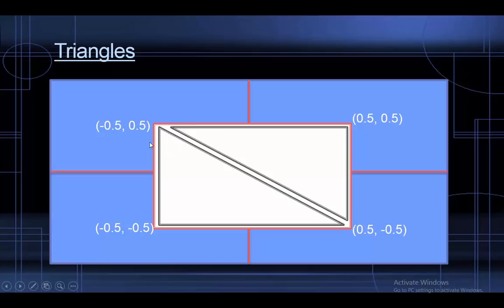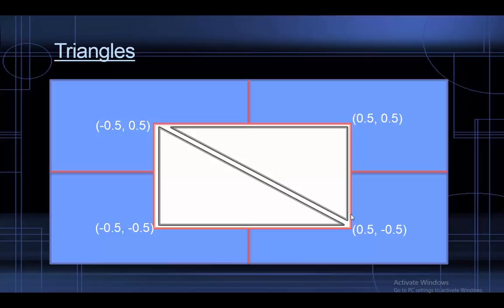We give it the first vertex of the first triangle, then the second and the third. The first vertex of the second triangle will be the same as the last vertex of the previous triangle. Then we give it the top right corner and the top left corner, whose vertex will be the same as the first vertex of the first triangle. We're rendering the same vertices multiple times, which can be a problem with large models taking up unnecessary memory — but we will fix that in the next video.